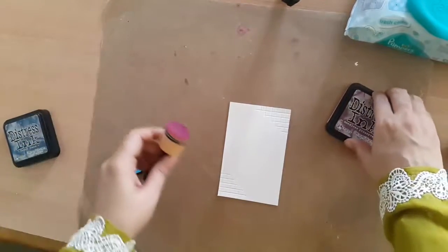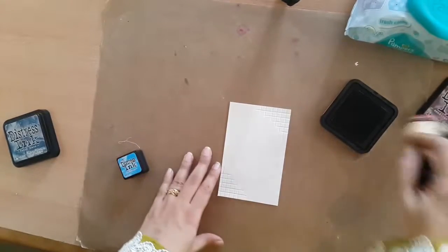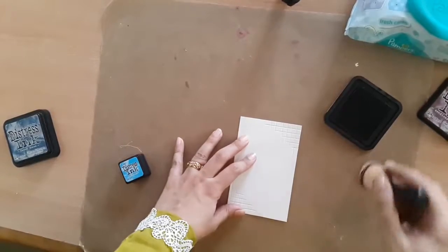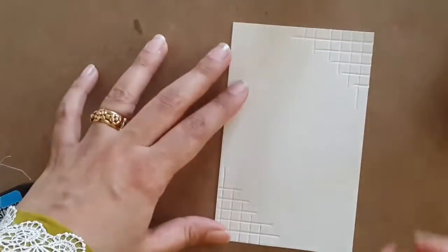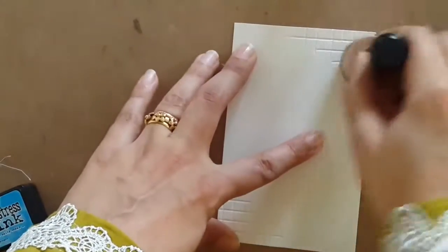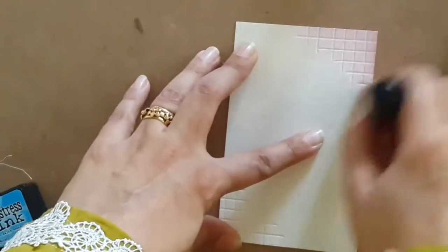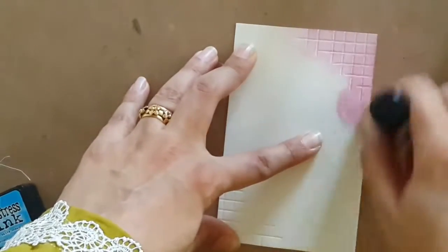I might use Faded Jeans but I'm not too sure. We'll just see as we move along. So I'm going to start with the Seedless Preserves, and I'm just going to start inking. You can see that the design starts becoming more prominent as we ink it up.